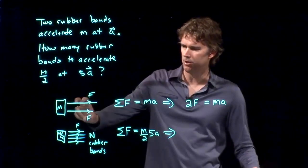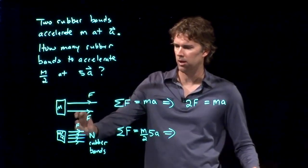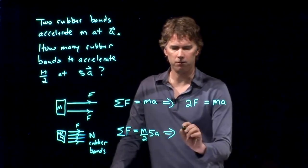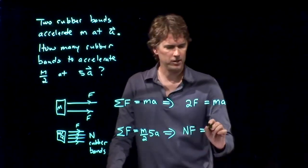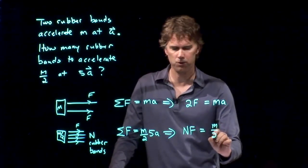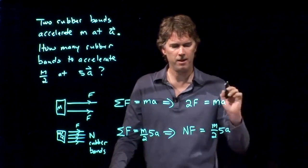And now what is the left side of this equation? Well, when I had two, it was 2F. If I have N, it is, of course, just NF. NF is equal to M over two times 5A.